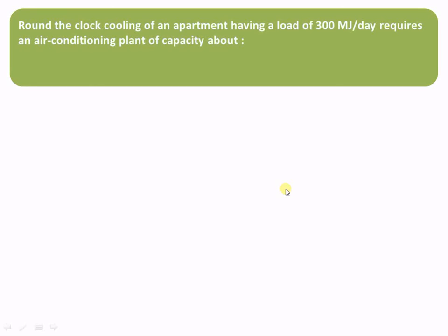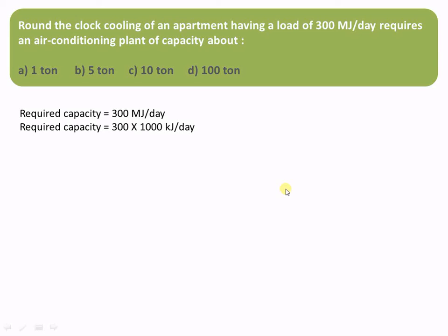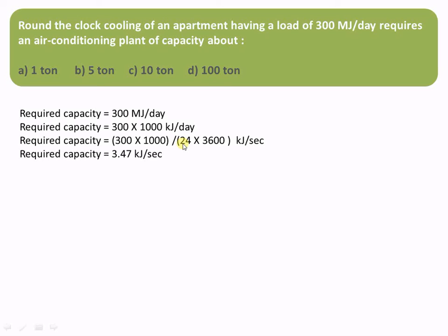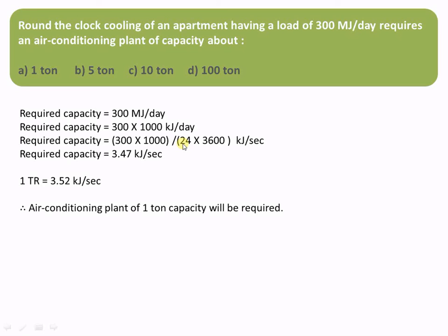In the next example, we have an apartment with a cooling load of 300 megajoule per day, and we need to find the ton of refrigeration (TR) capacity of the plant. Converting 300 megajoule per day to kilojoule per second: multiply by 1000 to get kilojoule, then divide by 24 × 3600 to convert per day to per second, giving a required capacity of 3.47 kilojoule per second. Since one ton of refrigeration equals 3.52 kilojoule per second, approximately one ton capacity of the air conditioning plant will be required.